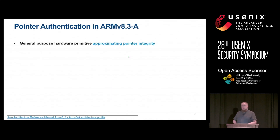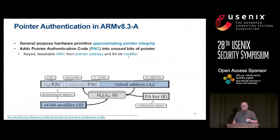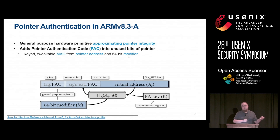This is where ARM pointer authentication comes in. ARM pointer authentication, or PA in short, is an upcoming feature in the ARM 8.3a CPU specification, so it's going to be available in essentially all upcoming ARM phones. What PA does is approximate pointer integrity using a pointer authentication code, called a PAC, which is embedded into the pointer.